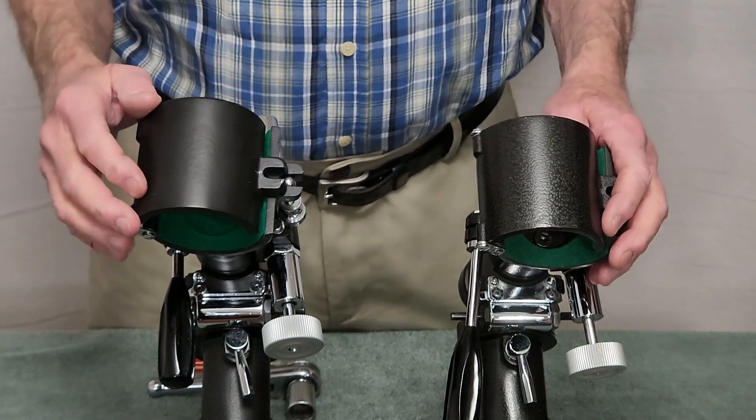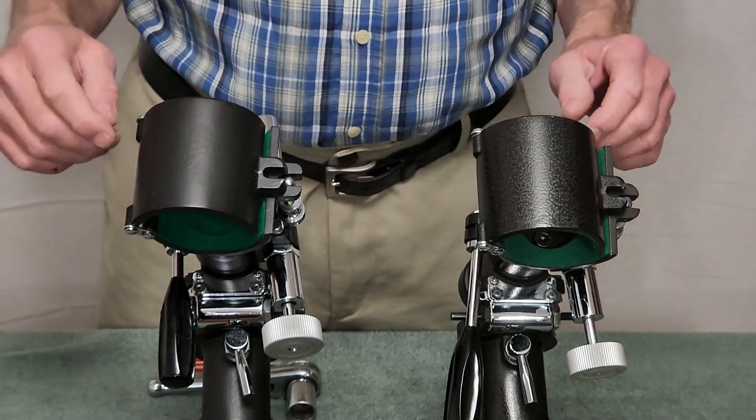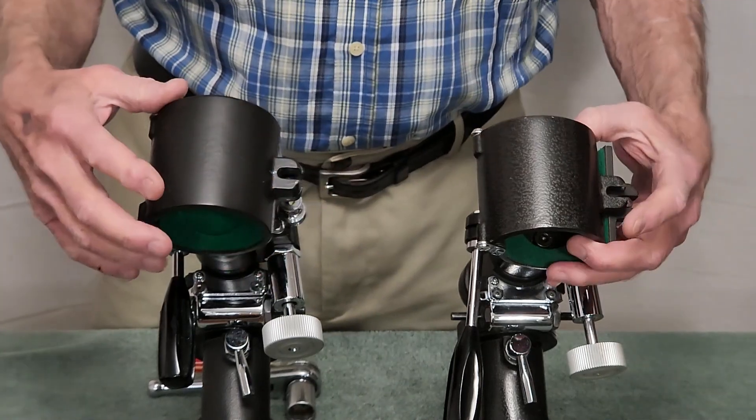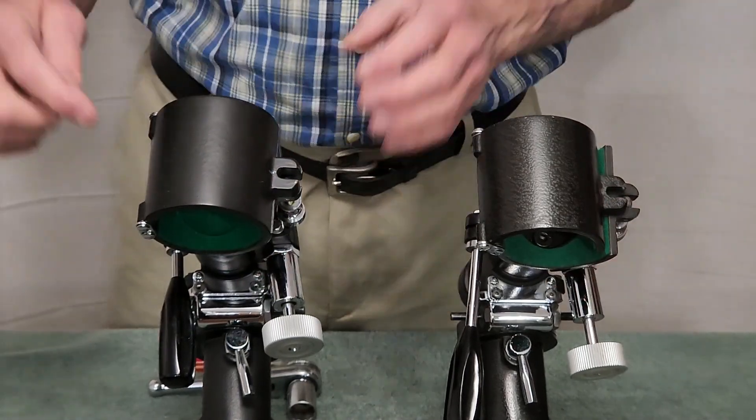In 1977, Takahashi systematized their mounts. Let me explain to you what that means. These are both TS 65 P's. This is the newer one over here, this is the older one.